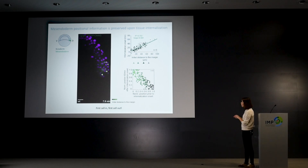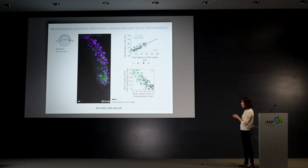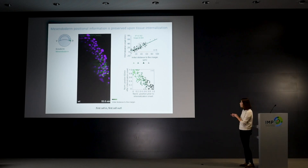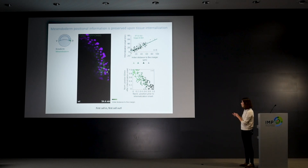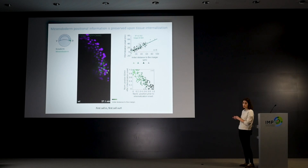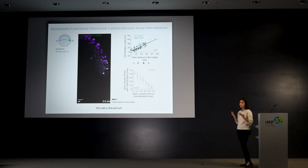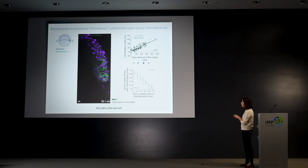This is exactly what we saw when we plotted the position of cells at the start of internalization and an hour after — data from six embryos. You can see that the color code stays together: the light cells that were initially close to the margin tend to stay together an hour later, and the darker cells also tend to stay together. This means that the relative position of cells is actually preserved through the process of internalization.